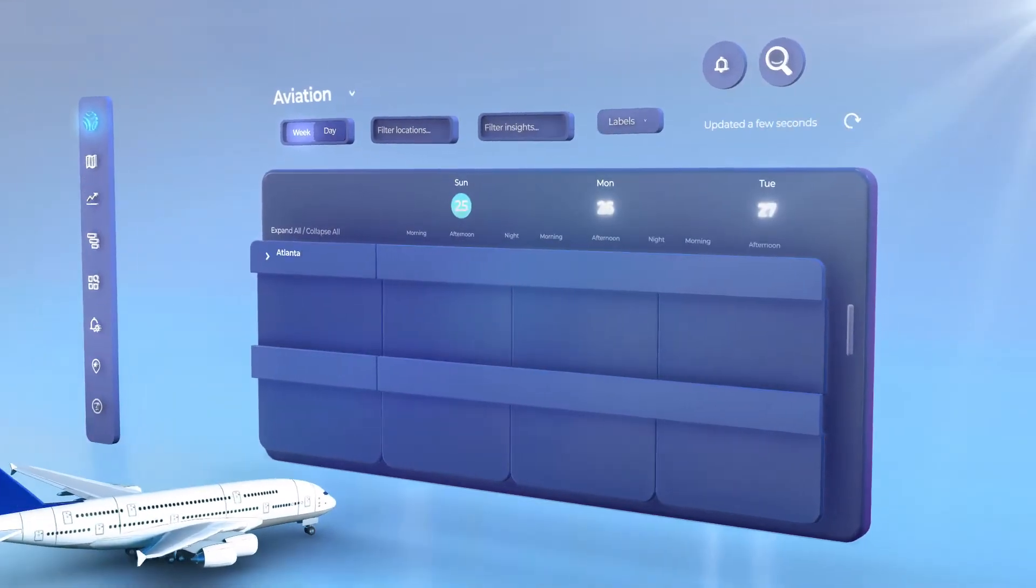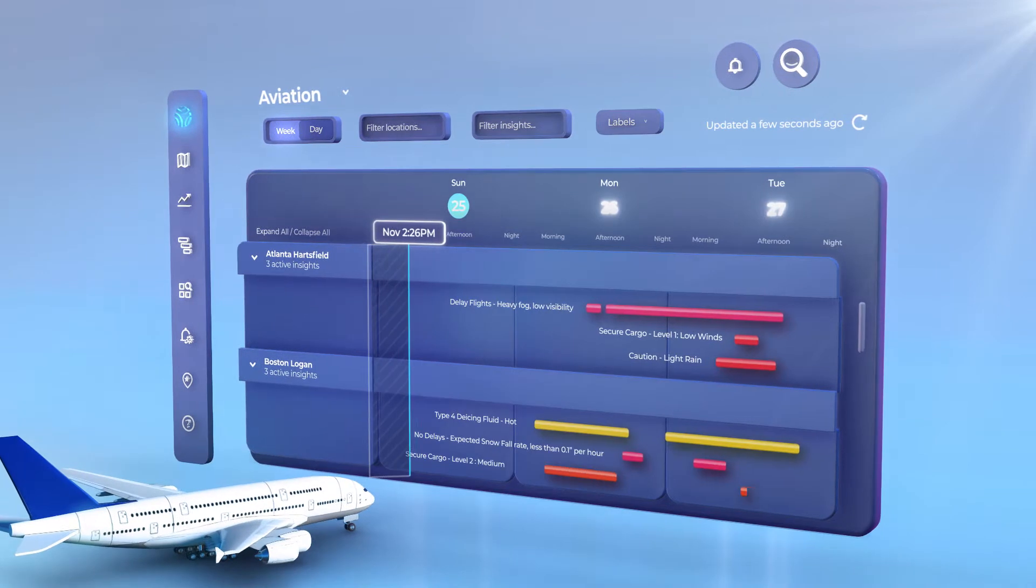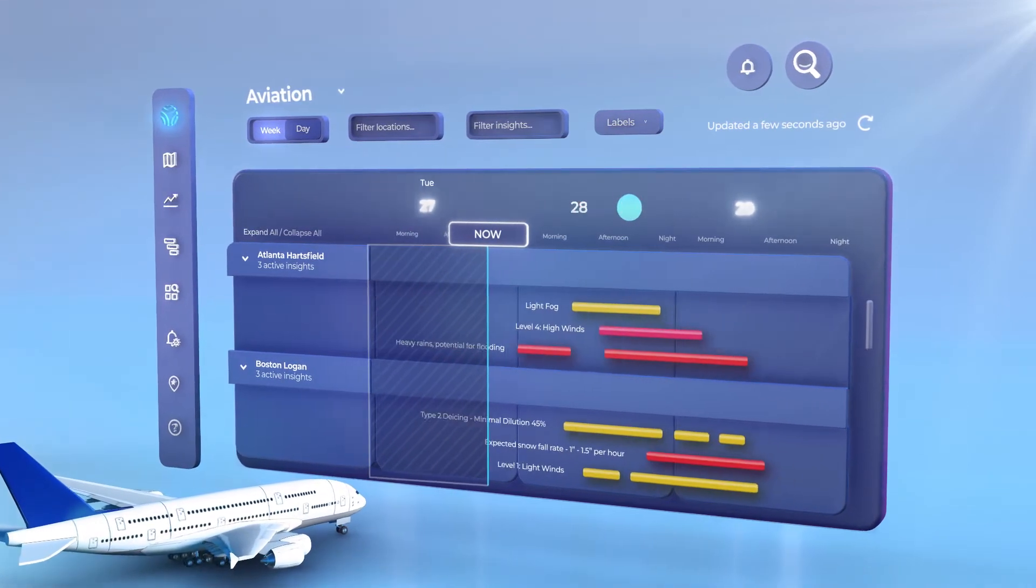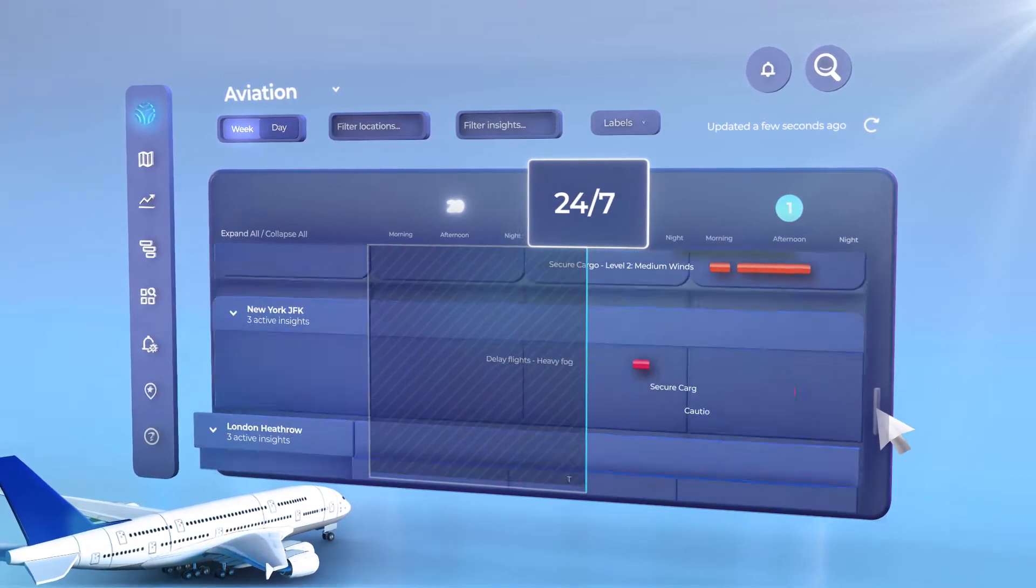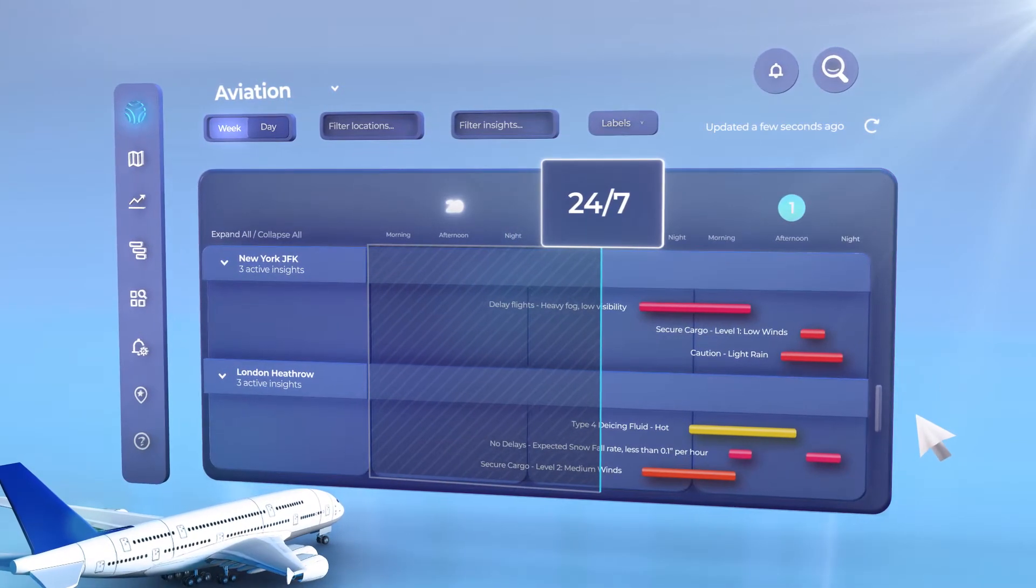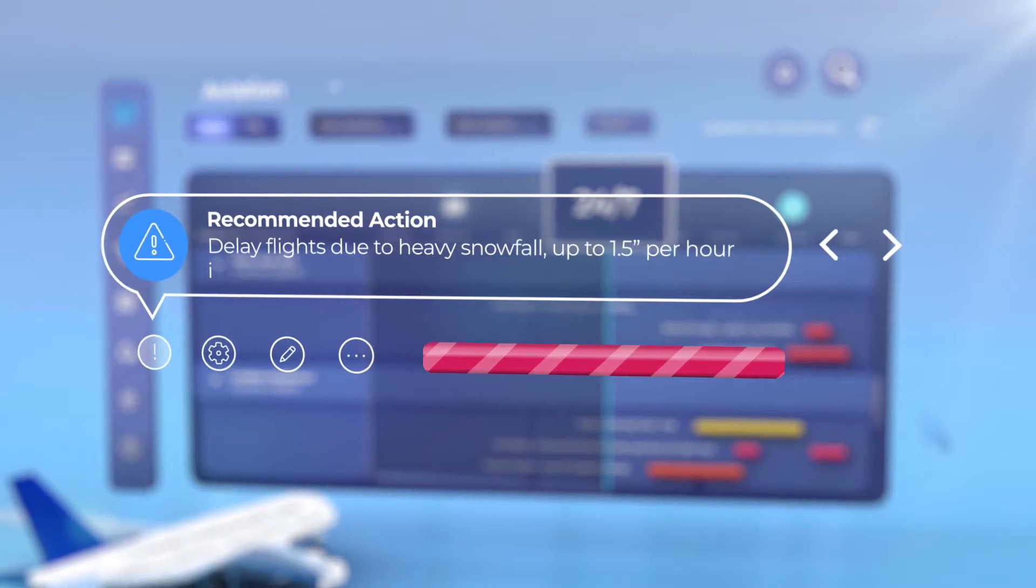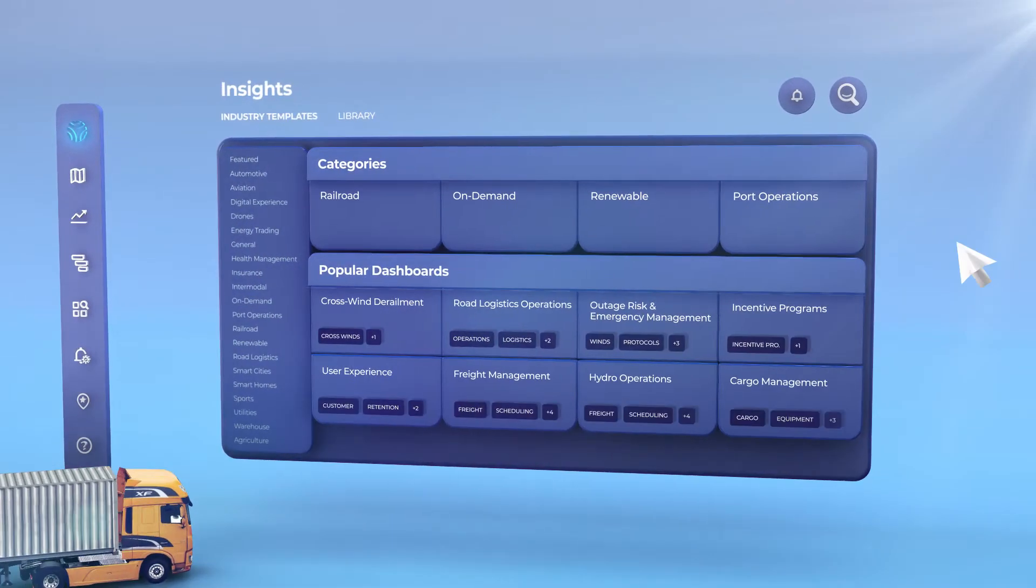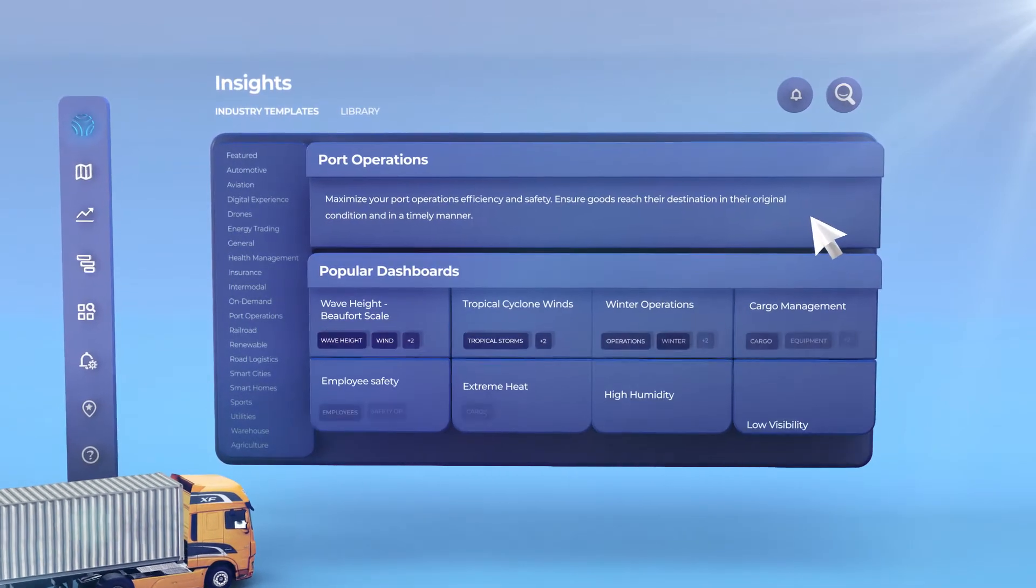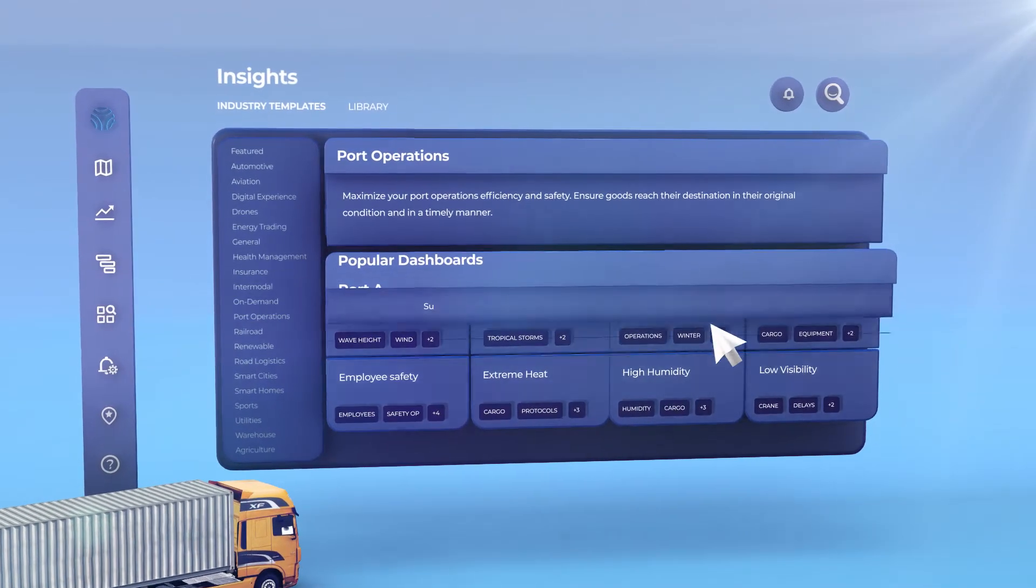To start, Tomorrow.io's insights dashboard monitors the impact of historic, real-time, and forecasted weather on your business 24-7 across any location. You no longer need to track weather forecasts. You can simply understand the impact and recommend actions for your business. You can select from thousands of pre-built templates or customize dashboards to specific thresholds and protocols.